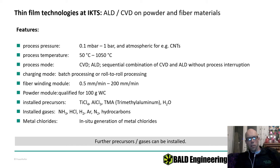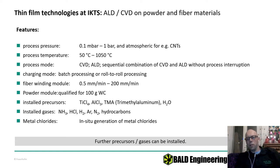We use either TiCl₄, TMA, or in-situ generated aluminum trichloride. Water is used for oxides; otherwise we use co-reactants like ammonia, HCl, hydrogen, argon, and nitrogen. We can also in-situ generate basically any metal chloride that is volatile enough — hafnium chloride, zirconium chloride, tungsten chloride — all made in-situ from metal chips in a special furnace.